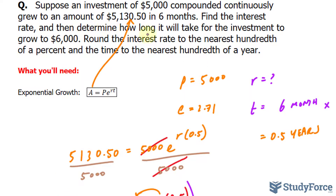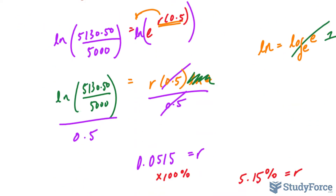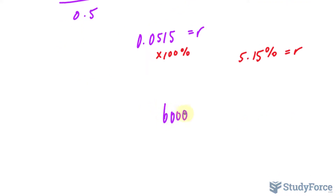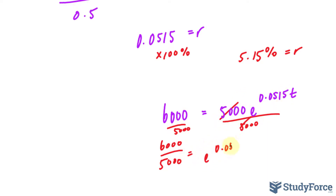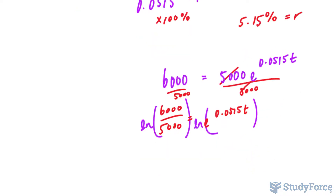The next part is to determine how long it will take for the investment to grow to $6,000. We do the same calculation again. This time the amount is $6,000, the principal is $5,000, and E is raised to the power of R times T. The rate is 0.0515 and we're looking for T. Dividing both sides by 5,000 cancels it out, giving us E to the power of 0.0515T. Taking ln of both sides gives us 0.0515T on the right side.